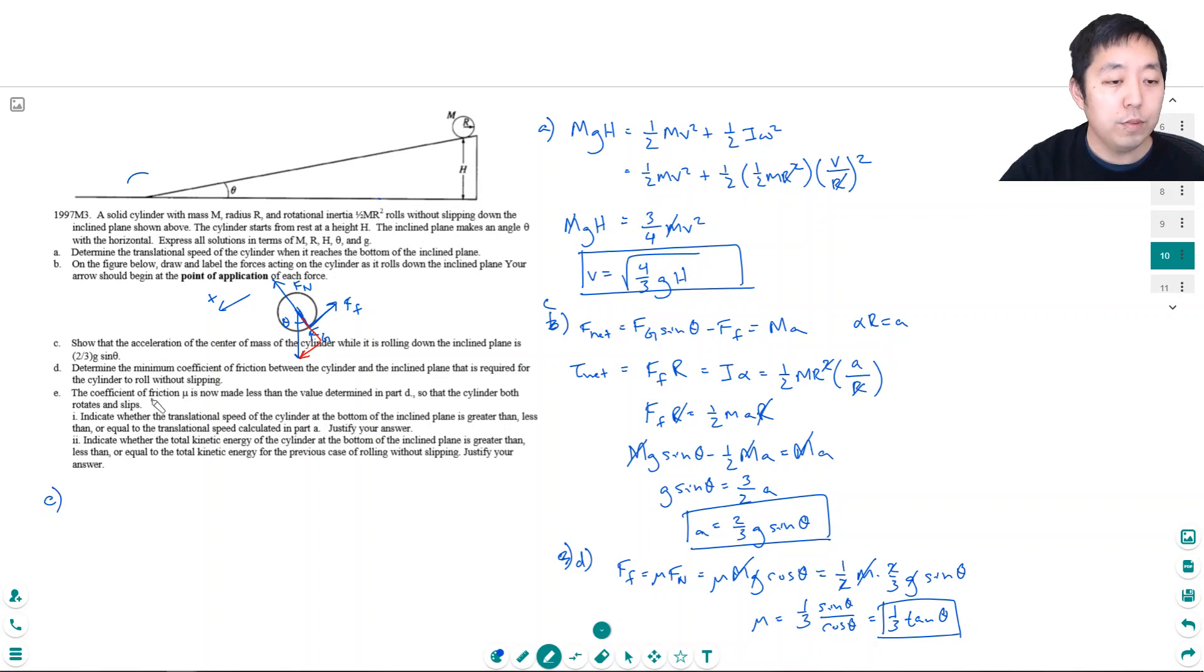Part E: The coefficient of friction mu is now made less than the value determined in part D, so that the cylinder both rotates and slips. Indicate whether the translational speed of the cylinder at the bottom of the inclined plane is greater than, less than, or equal to the translational speed calculated in part A. So when we were rolling without slipping, we were basically saying that the omega has to be the same. Basically without slipping, omega r equals v.